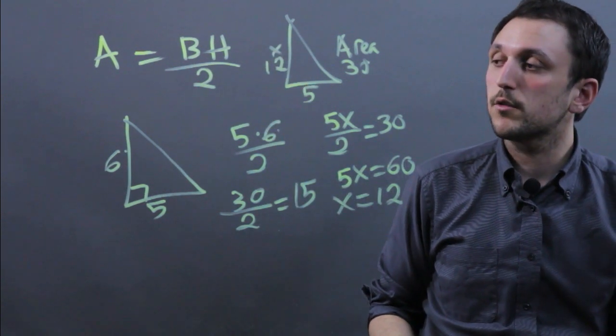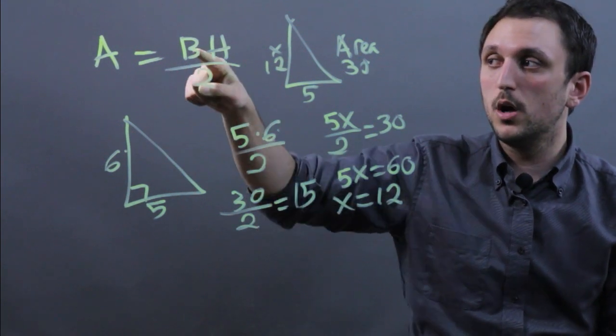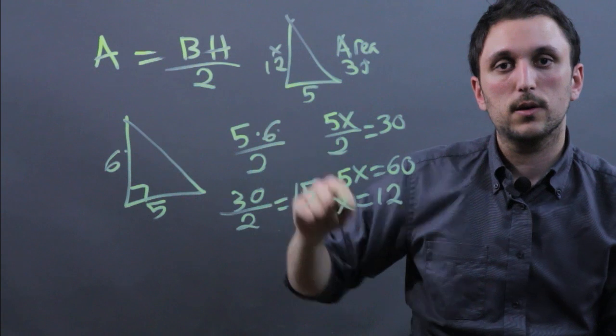So I'm Charlie Kasov and you just learned how to find the area or the size of a triangle. Base times height over 2 when base and height are perpendicular. Thanks a lot.